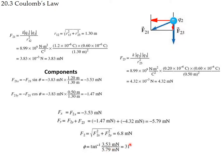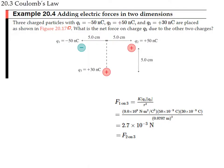A similar problem: q1, q2, q3 — what is the net force on q3 from the other two? The force from q1 on q3 is attractive, pointing toward q1. The force from q2 on q3 is repulsive, pointing downward. We need to decompose and add these forces.